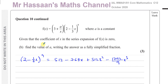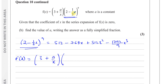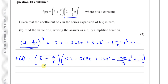Part B says: F(x) is equal to (3 plus A over x) times (2 minus one-third x) to the power of nine, where A is a constant. Given that the coefficient of x in the series expansion of F(x) is equal to zero, find the value of A, writing the answer as a fully simplified fraction. What we have here is the same thing we just expanded, so F(x) equals (3 plus A over x) multiplied by the expansion: 512 minus 768x plus 512x² minus 1792 over 9 x³.